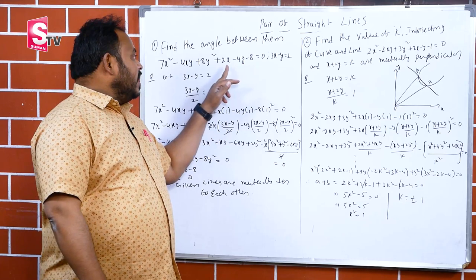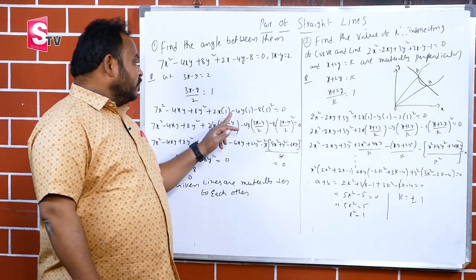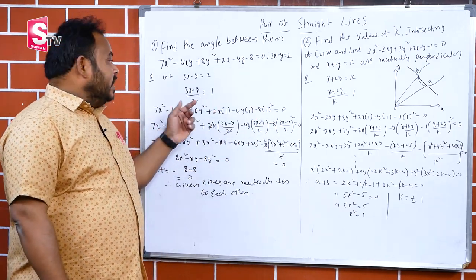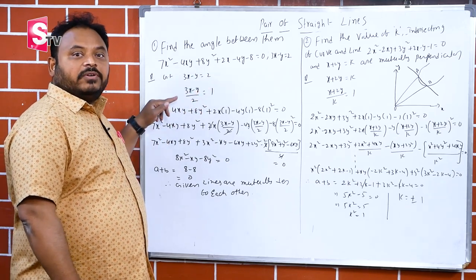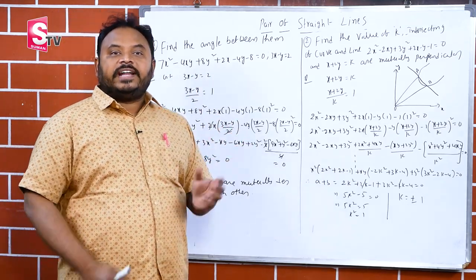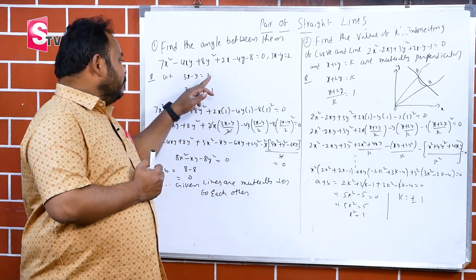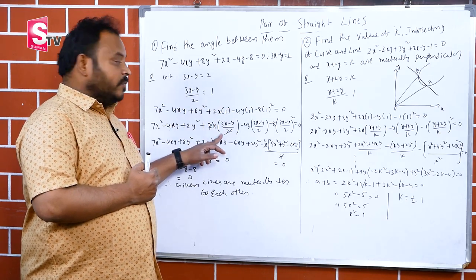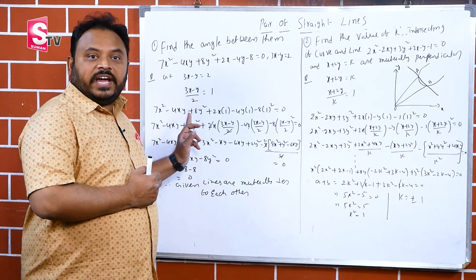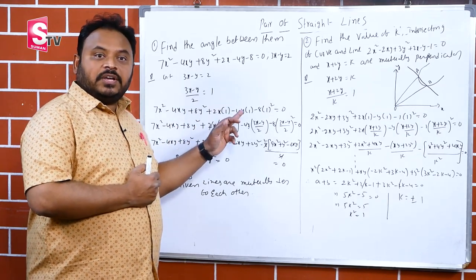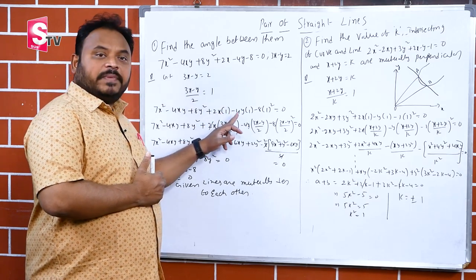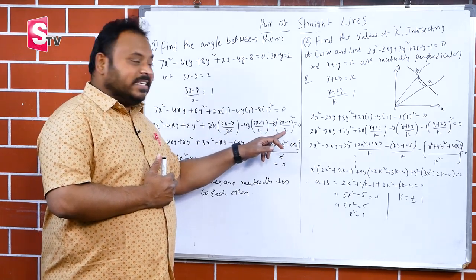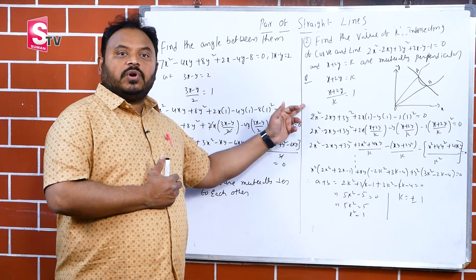Since 3x minus y by 2 equals 1, we substitute (3x minus y)/2 in place of 1. The equation becomes: 7x² minus 4xy plus 8y² plus 2x·[(3x minus y)/2] minus 4y·[(3x minus y)/2] minus 8·[(3x minus y)/2]² equals 0. The 2s cancel, and we expand (a minus b)² as a² minus 2ab plus b².